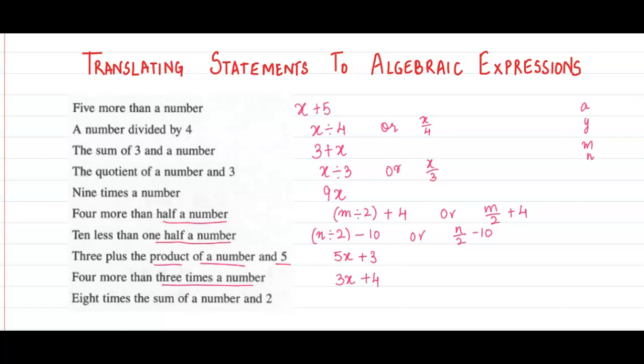8 times the sum of a number and 2. So x plus 2, and look at this, 8 times. We have to put the bracket over here because we are doing 8 times the sum. So this represents 8 times the sum of a number and 2. I hope this video was good and you understand the concept. Thanks for watching.